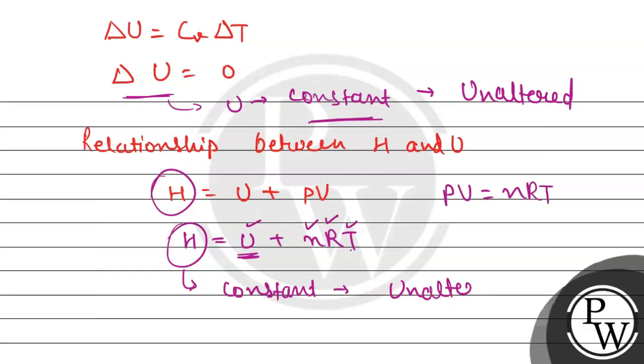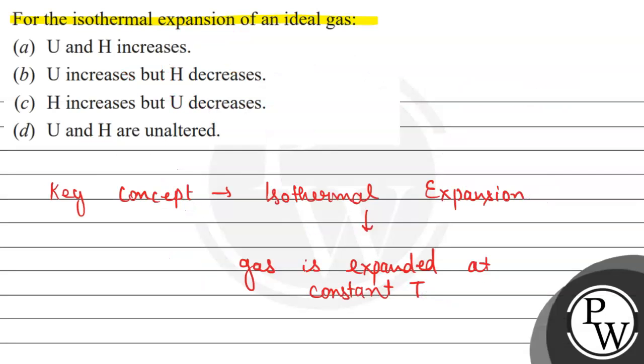In case of the isothermal expansion of an ideal gas, option D is the correct match. We have option D which says U and H are unaltered.